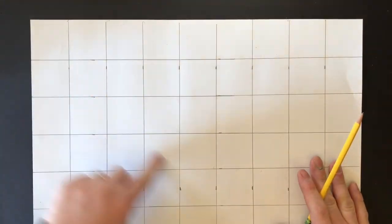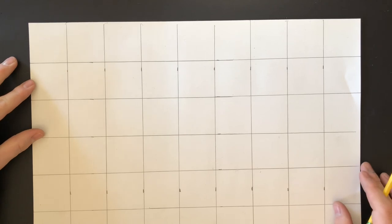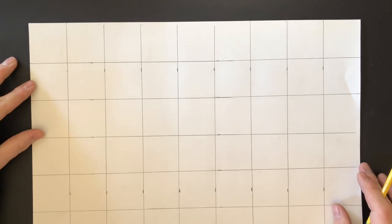Alright, and then you have a two-inch by two-inch grid on your paper.